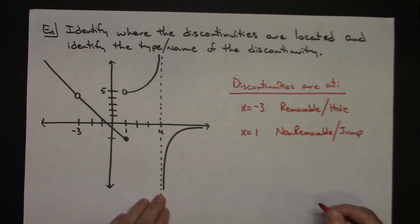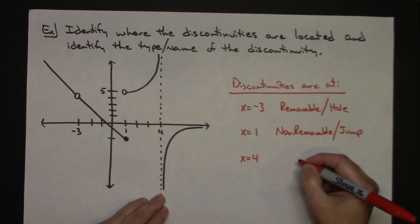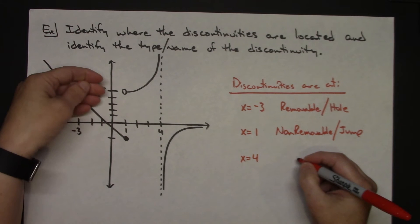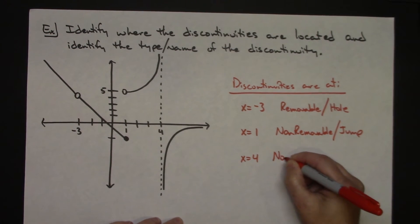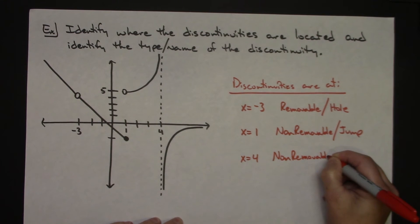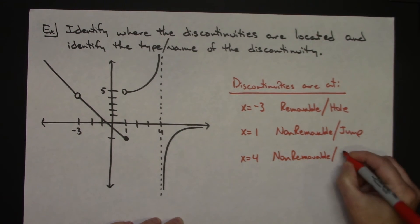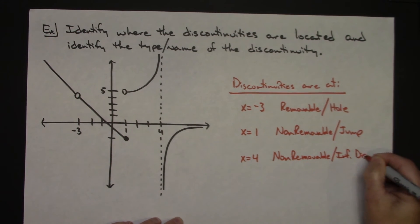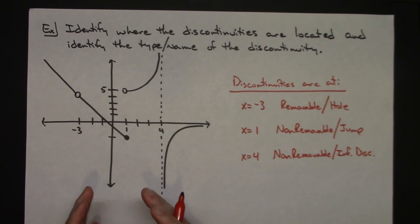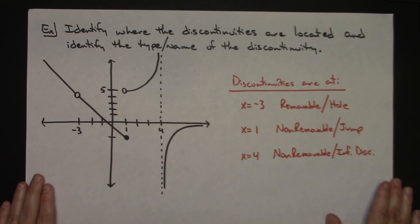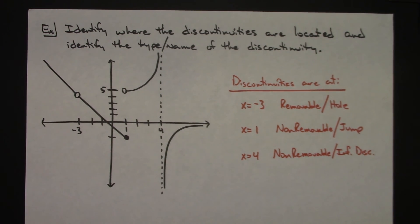Continuing on the graph around x = 4, there's a vertical asymptote with the graph going to positive infinity on one side and negative infinity on the other. That's a non-removable discontinuity — more specifically an infinite discontinuity. Identifying where discontinuities occur is a very important concept for later work in calculus, and knowing everything you can about a graph will be very helpful.